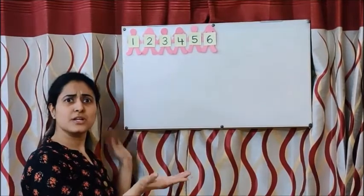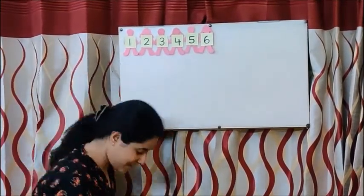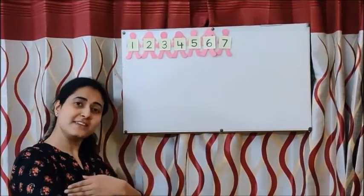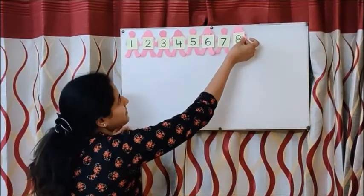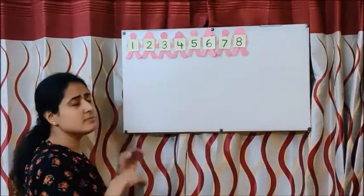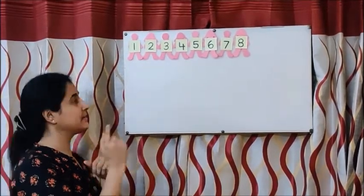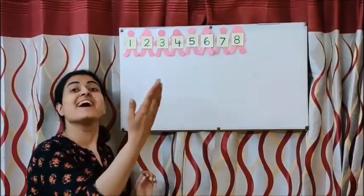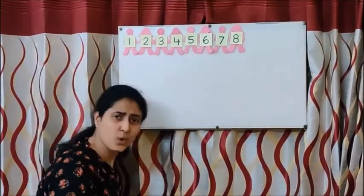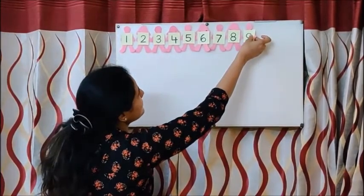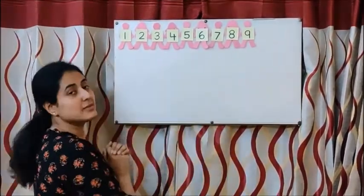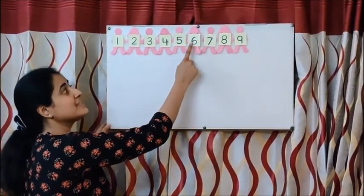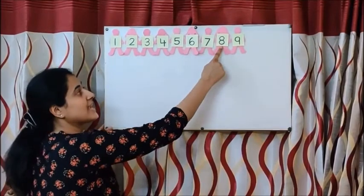What comes after 6, children? Yes — seven. What comes after seven? Eight. What comes after eight, children? Let us count and find them: 1, 2, 3, 4, 5, 6, 7, 8, 9. Very good, you all are very smart. So now let us recite again: one little, two little, three little Indians; four little, five little, six little Indians; seven little, eight little, nine little Indians.